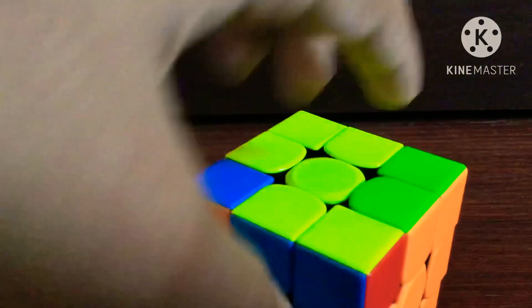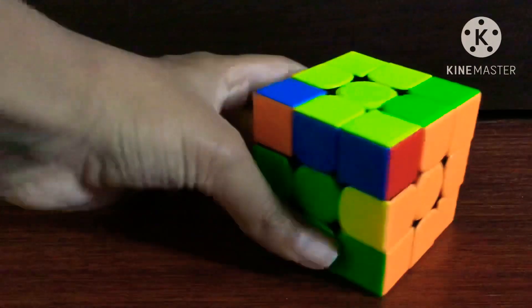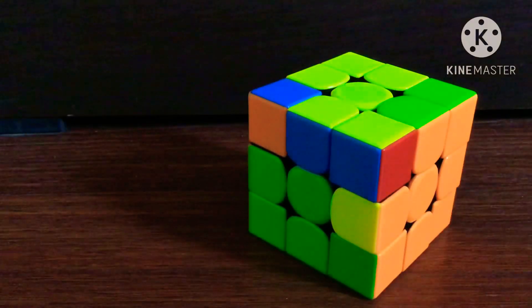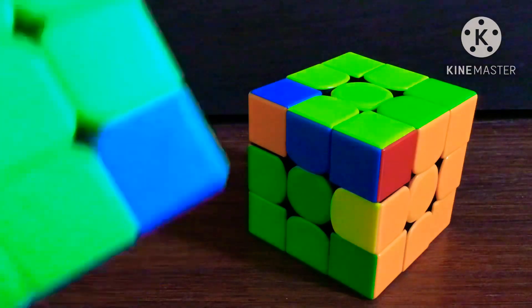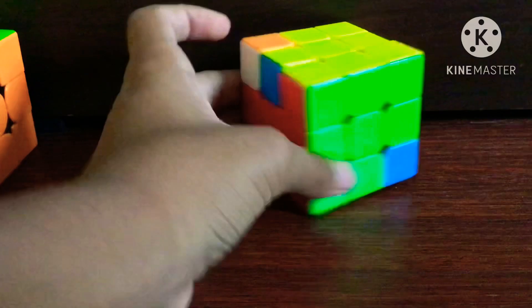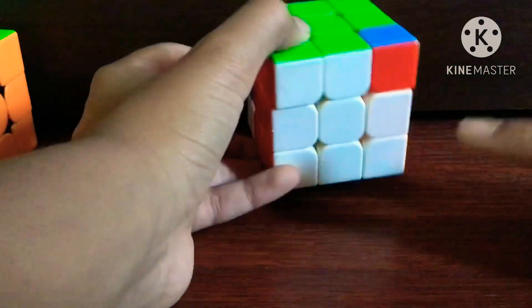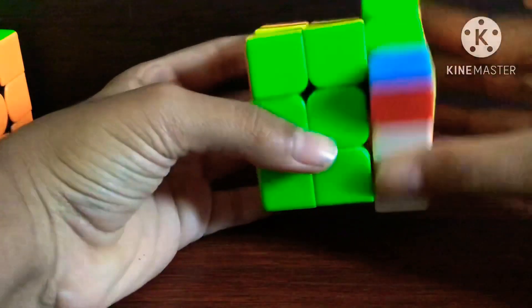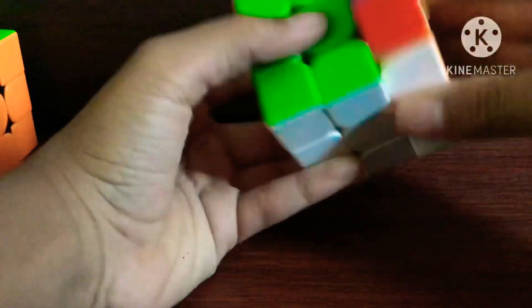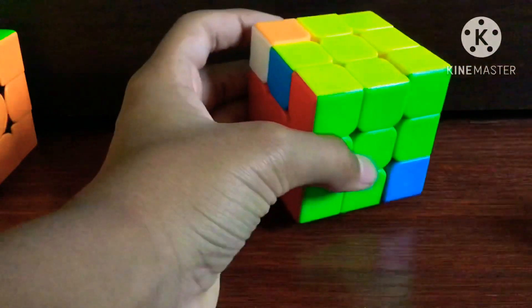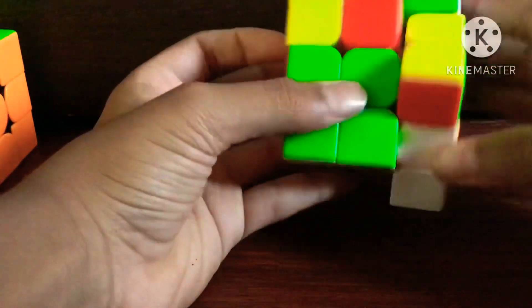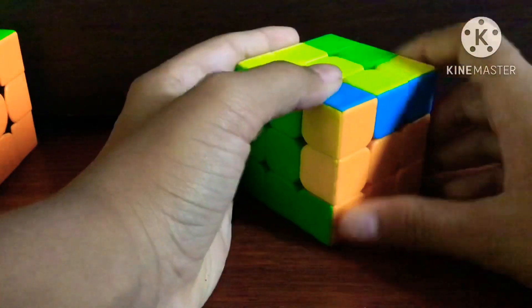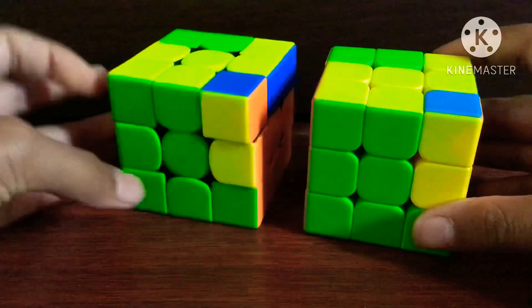So this is our last case. The cross is almost done, but we need to put this edge inside. How you do this case is pretty simple if you know blindfolded W method. All you have to do is, in this case where you have to put this corner into here, you do the algorithm, but in the middle of the algorithm you get this case, the same exact case.